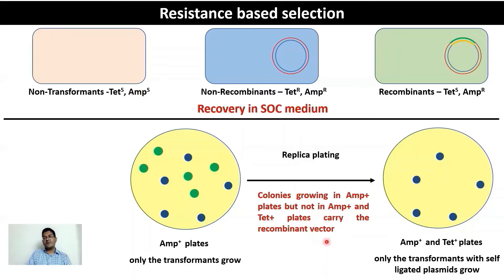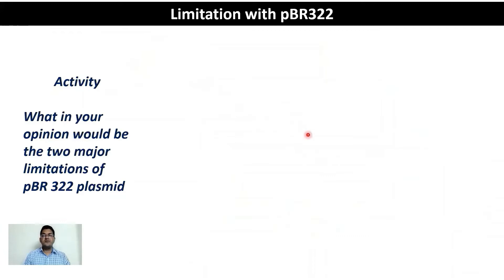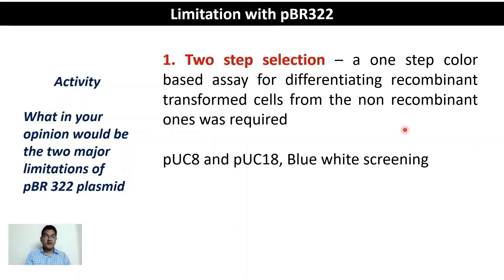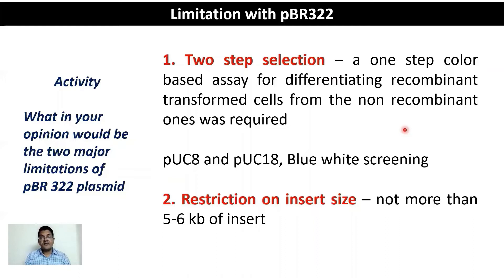The major limitations of pBR322 and why we need to move to other vectors like pUC8 and pUC18: first, the selection process is slightly elaborate — a two-step, indirect selection. A one-step color-based assay for differentiating recombinant from non-recombinant transformants would be more convenient. Second, the maximum insert size that plasmids can hold is not more than 5 to 6 kb, which is a major concern.